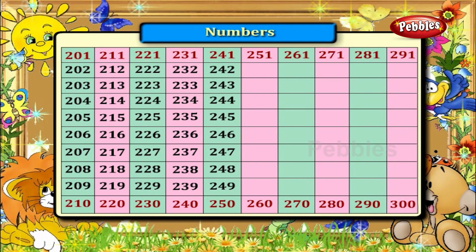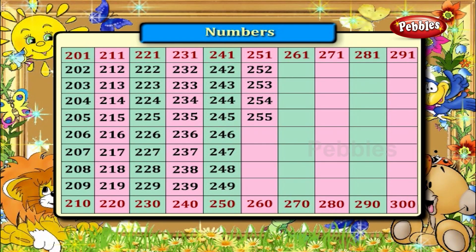Numbers between 251 and 260. They are 252, 253, 254, 255, 256, 257, 258 and 259.